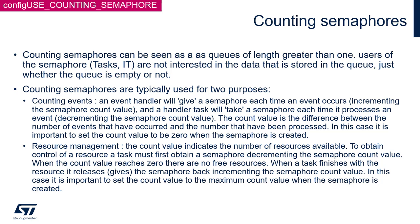The first purpose is counting events. An event handler can give a semaphore each time an event occurs by incrementing the semaphore count value. The handler task will take a semaphore each time it processes an event, decrementing the semaphore count value. In this case, it is important to set the count value to 0 when the semaphore is created.